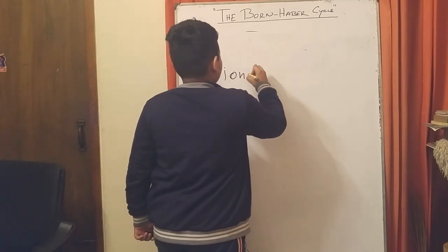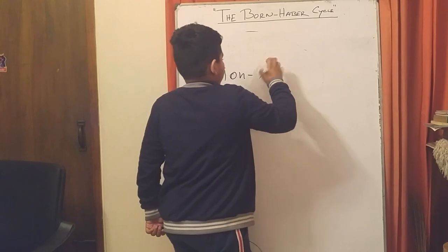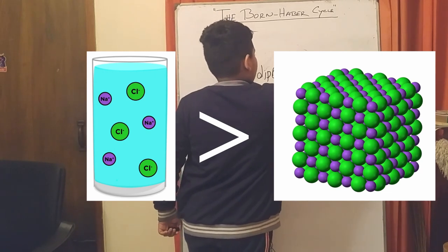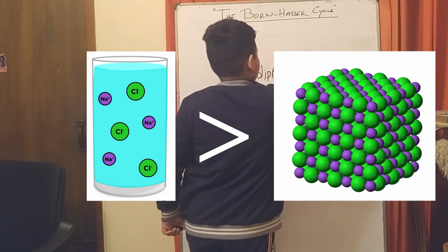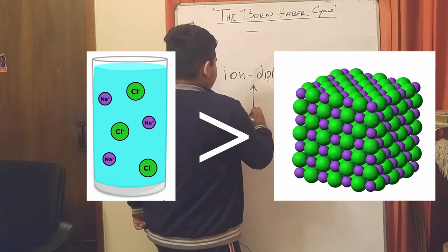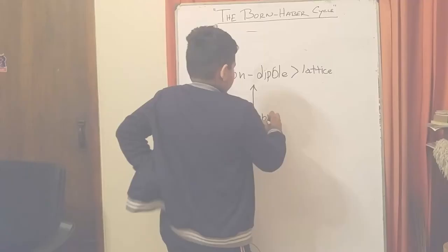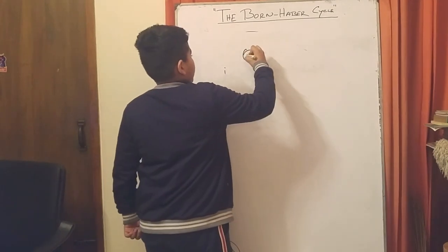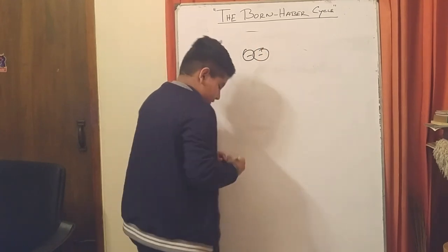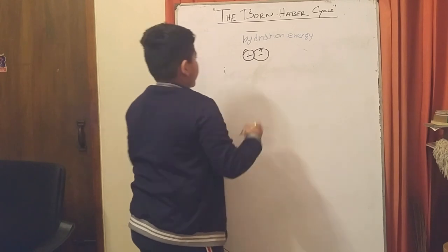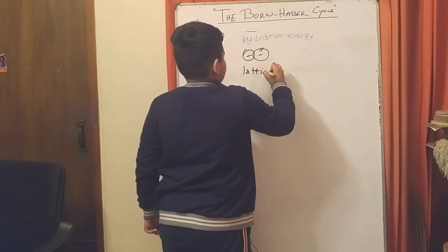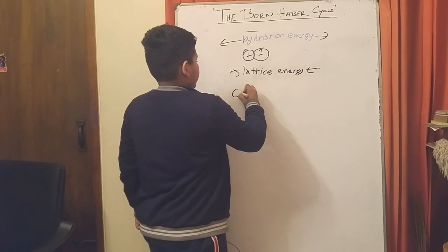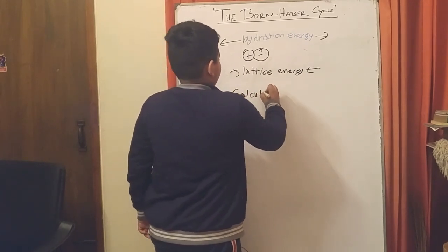Now all we have to know is that if the ion-dipole interaction stores more energy than the lattice energy, then the interaction would mean that it is soluble. Then there is the hydration energy, which spreads out. There are the two types: the hydration energy and the lattice energy.